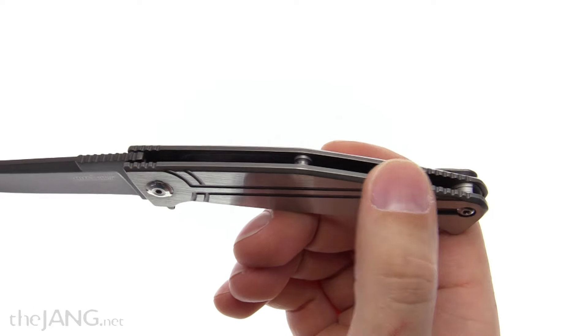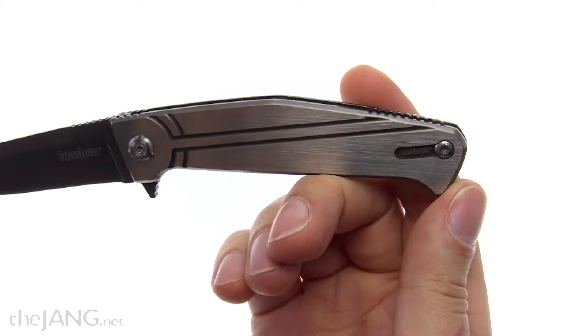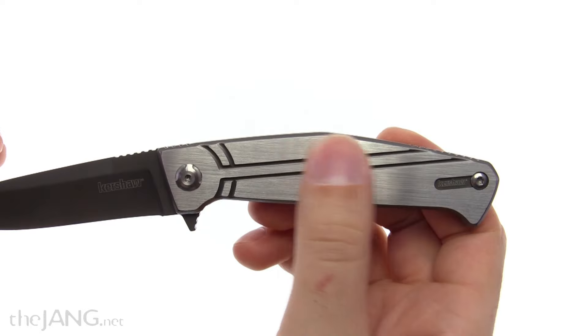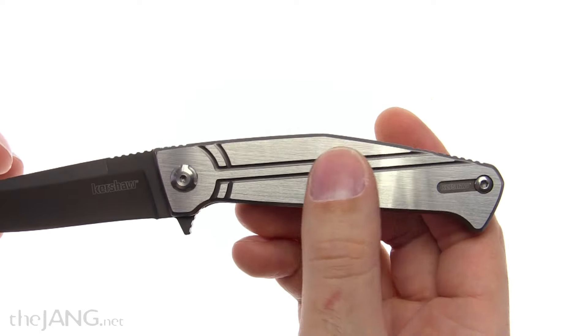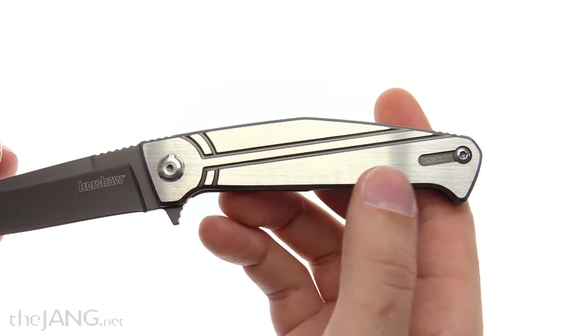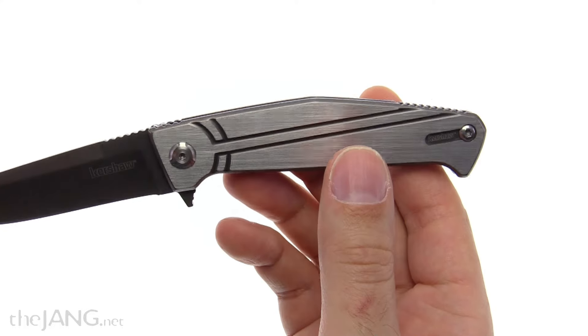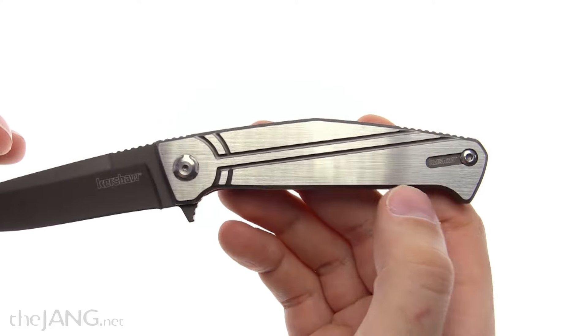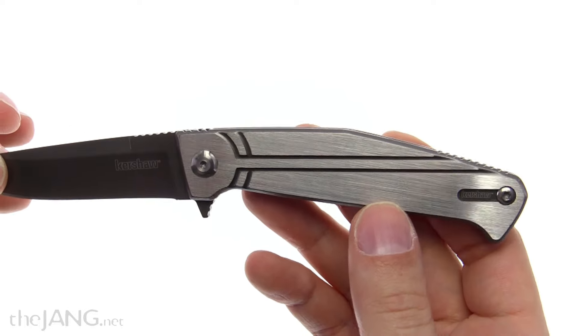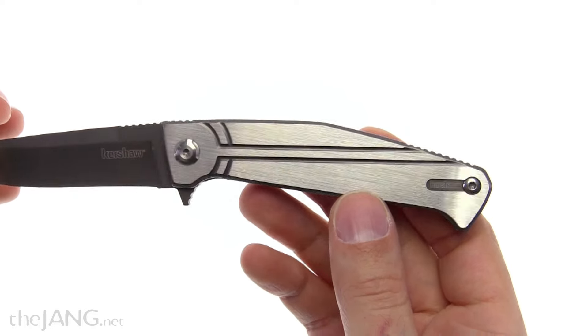This is a very nice brushed texture here and this is a two-tone design. So these are aluminum handles and then it's two-toned with an anodization, kind of a matte gray, matte medium gray in there which looks pretty nice.